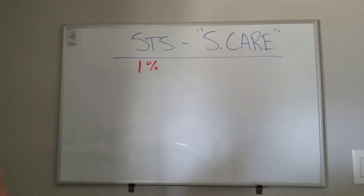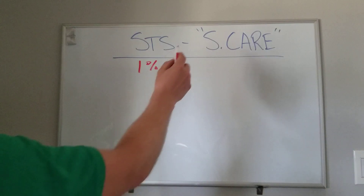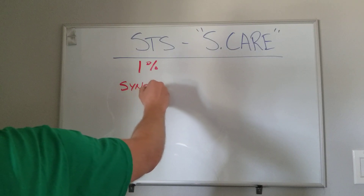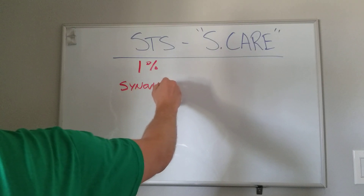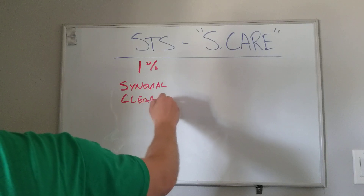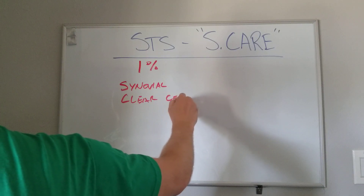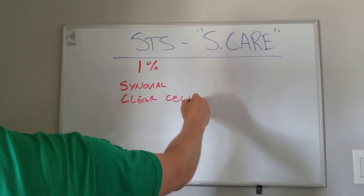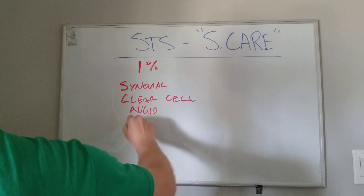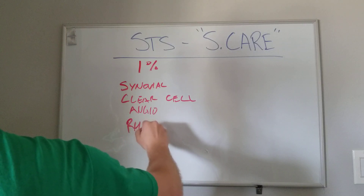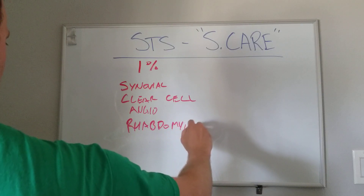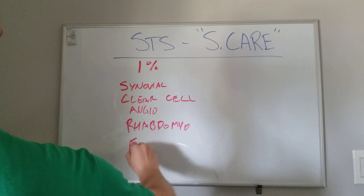Those five types spell SCARE: Synovial, Clear cell, Angio, Rhabdomyo, and Epithelial.